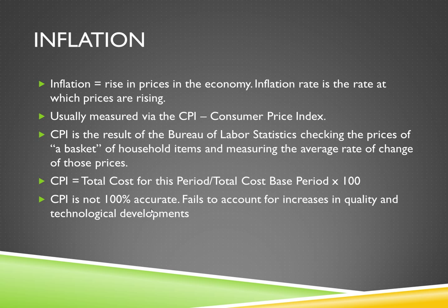The Consumer Price Index is calculated by the Bureau of Labor Statistics, which indexes a basket of household goods — some $90,000 plus — and measures the average rate of change of these prices. It then compares the total cost of these goods for a certain year to a base year, and the change between these two years is the CPI. The exact formula is: total cost for one period divided by the total cost for the base period, times 100 to find the percentage.